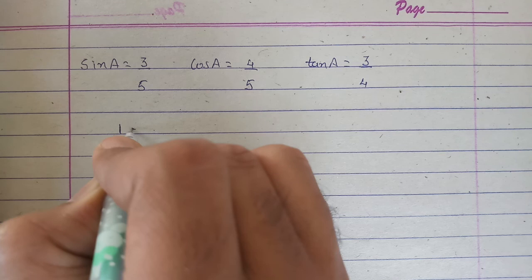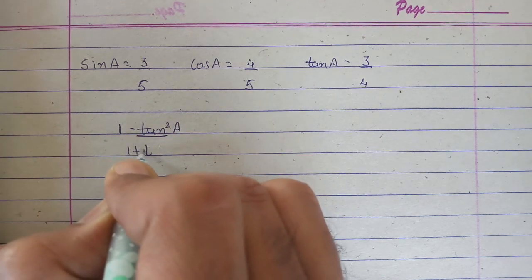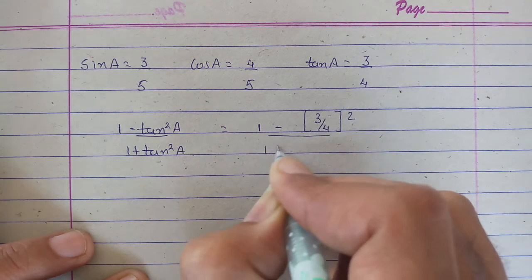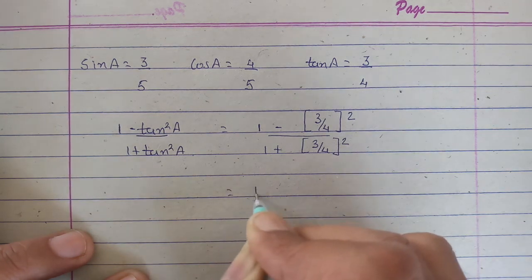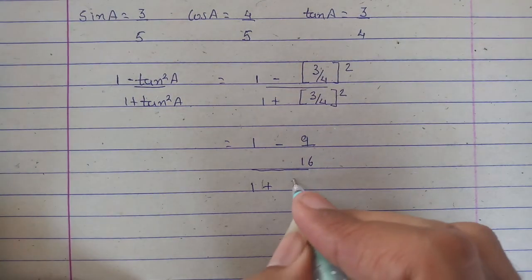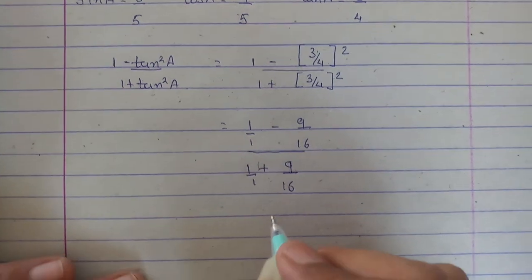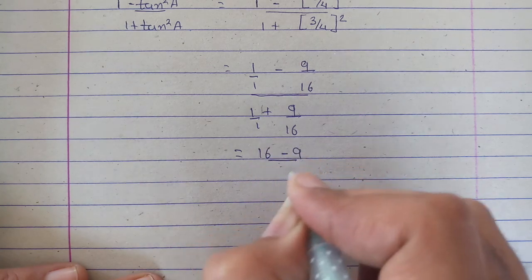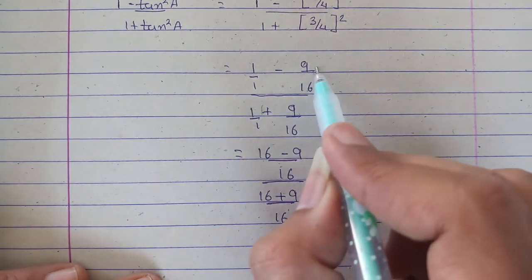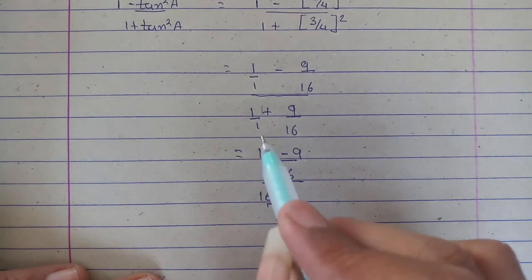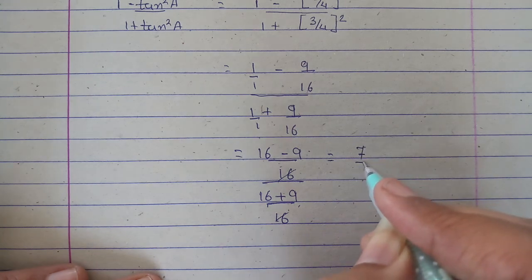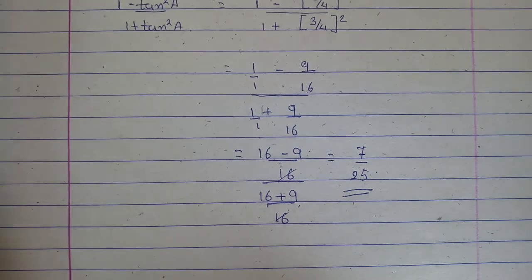Now the left hand side of the equation is (1 - tan²A)/(1 + tan²A). That's 1 minus (3/4)² divided by 1 plus (3/4)². 1 minus 9/16 over 1 plus 9/16. We'll take 1 and do cross multiplication. So that will be (16 - 9)/16 over (16 + 9)/16. These will cancel. Our answer will be 16 minus 9, that is 7, over 16 plus 9, that is 25. So LHS answer is 7 upon 25.